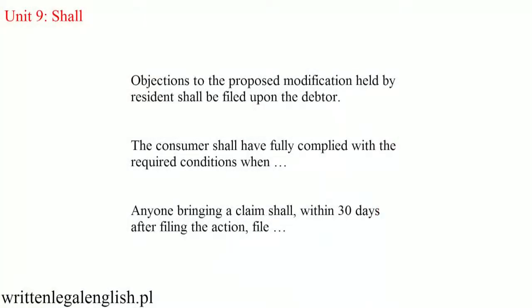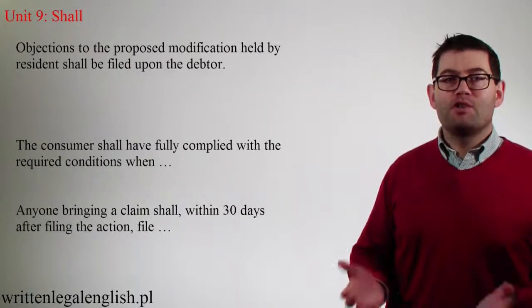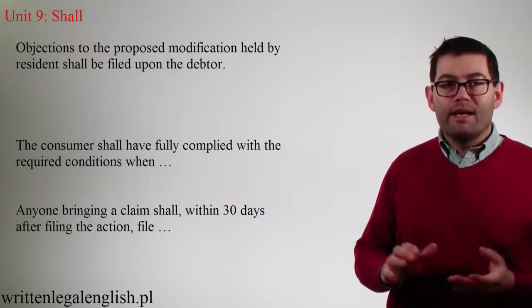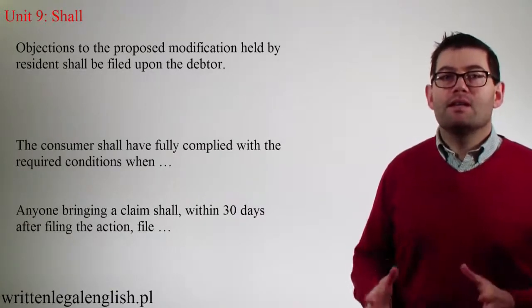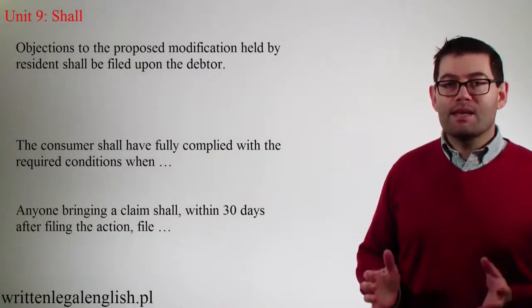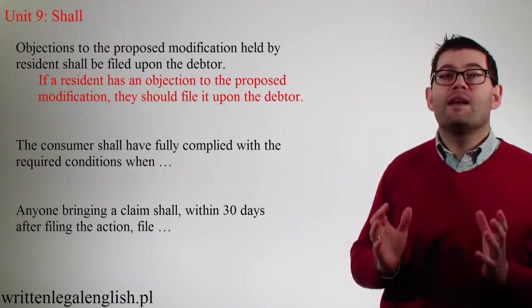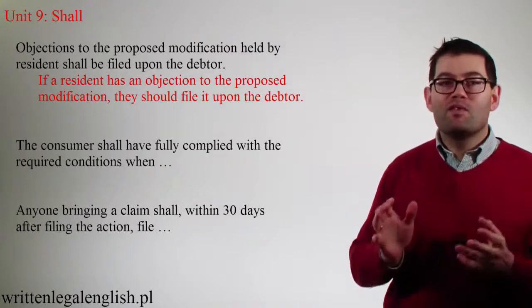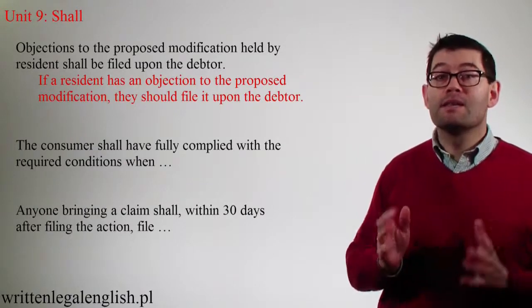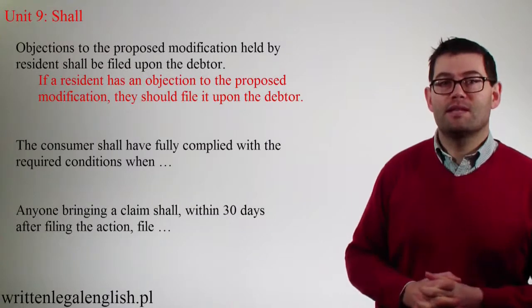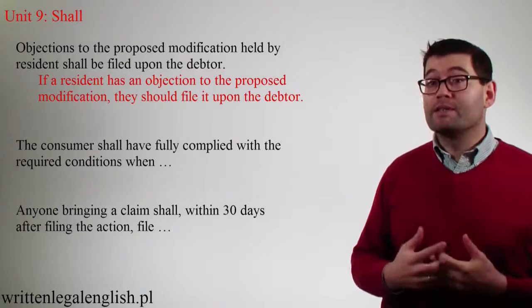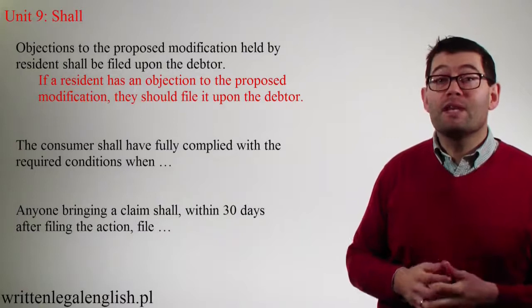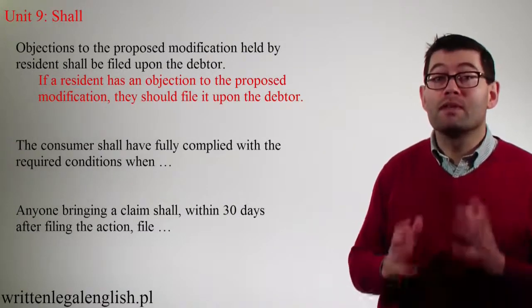Let's have a look at a few more. 'Objections to the proposed modification held by resident shall be filed upon the debtor.' If you're ever slightly confused by a text, it's always a good idea to ask yourself what is the basic main message. In this case, it's: if a resident has an objection to the proposed modification, they should file it upon the debtor. In rewording the sentence, we've automatically translated shall into should — in other words, this text is directory. However, without further context, shall in this sentence could have different meanings. For example, it could be argued that this sentence gives the resident permission — in other words, shall means may.